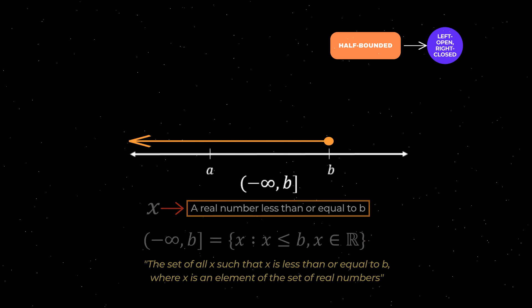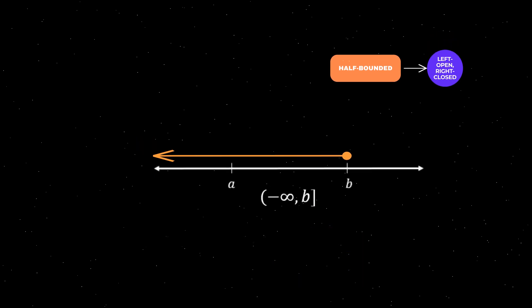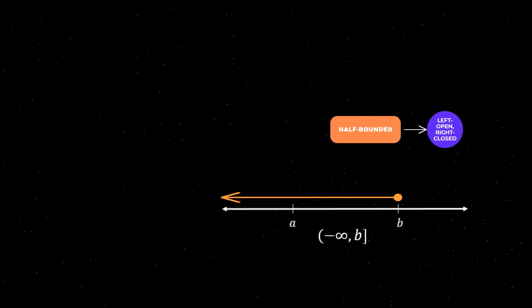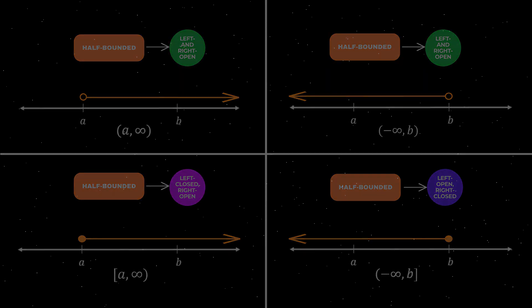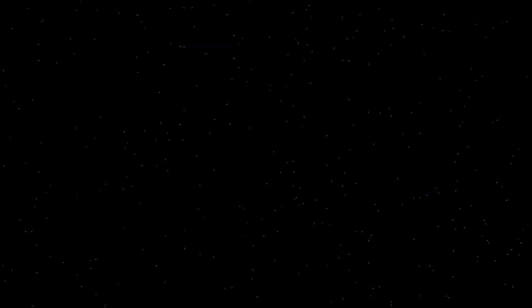And there we have it. These four types of intervals are all possible types of half bounded intervals that can be created. Let's now conclude this tutorial by discussing unbounded intervals.